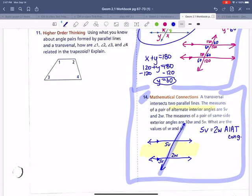Now, our notes tell us that alternate interior angles are congruent. So we would have to say 5V is equal in measurement to 2W. Now, they said a measure of same side exterior are 10W and 5V. So same side exterior angles, these numbers are exterior, same side exterior. Well, we know from our notes that same side exterior angles are supplementary. They add up to 180.